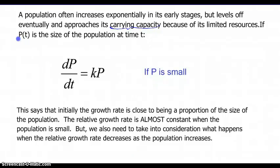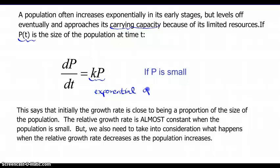If p of t is the size of the population at any time t, then the rate at which the population is changing over time acts like exponential growth. It acts like this only when the population is small. Initially the growth rate is close to being a proportion of the size of the population — the relative growth rate is almost constant when the population is small.